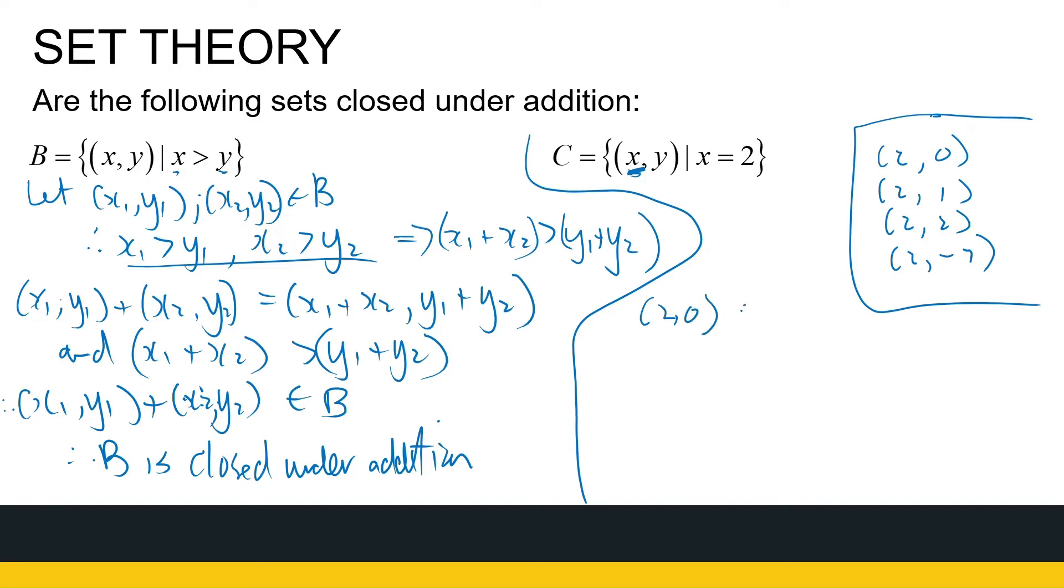(2, 0) is an element of C and (2, 2) is an element of C. If I add them together, (2, 0) plus (2, 2) is equal to (4, 2). That's not in C. You could have chosen any two elements. I just chose two random ones because as soon as I add them together, that first entry becomes 4 where I need it to be 2. So therefore, C is not closed under addition.